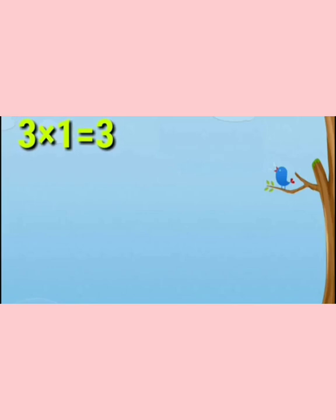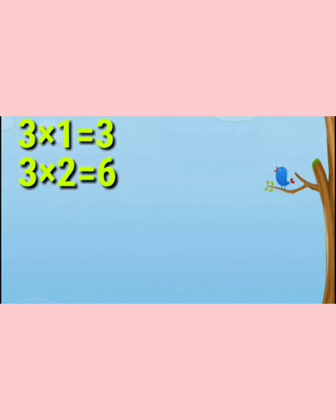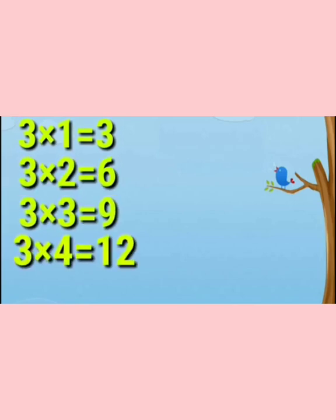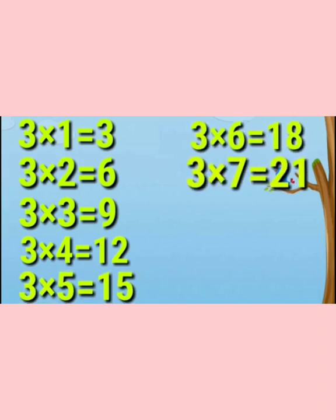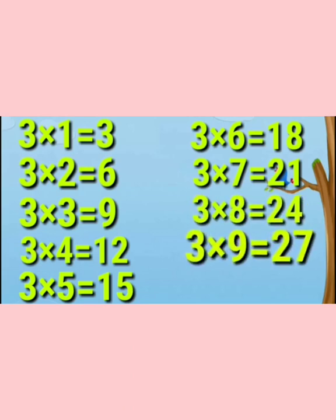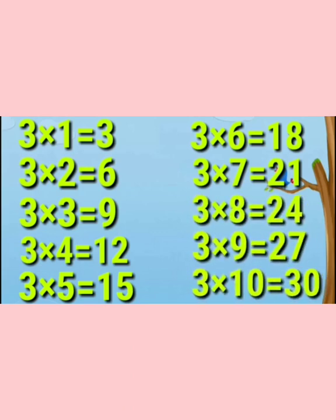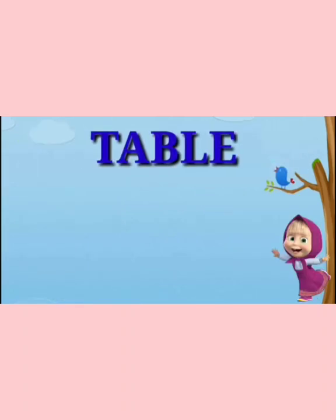Now again repeat: 3 ones are 3, 3 twos are 6, 3 threes are 9, 3 fours are 12, 3 fives are 15, 3 sixes are 18, 3 sevens are 21, 3 eights are 24, 3 nines are 27, 3 tens are 30. Now next table is table of 4.